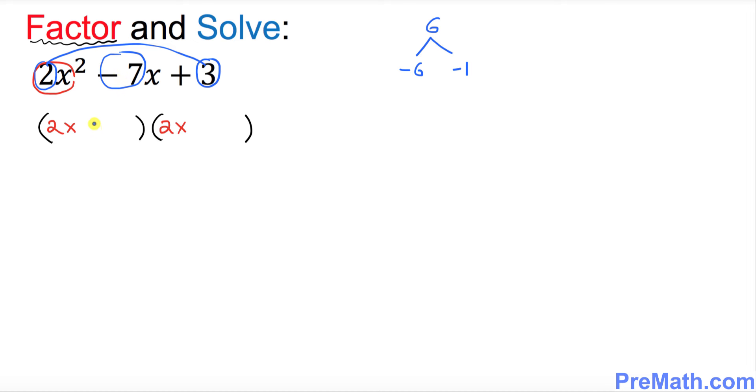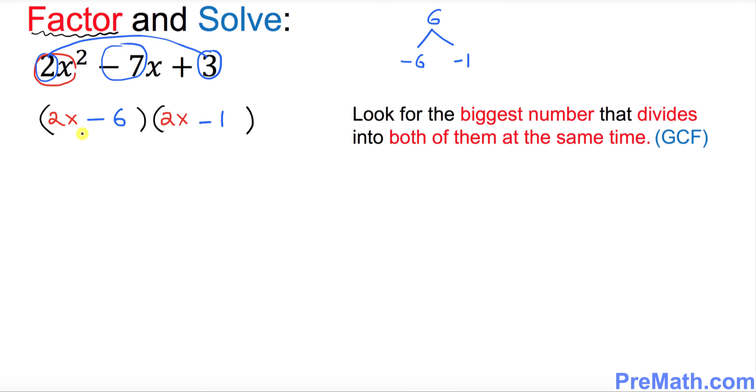Now in the next step, I want you to look at the very first parentheses. What are your numbers? Your numbers are 2 and 6. I want you to look for the biggest number that divides into both of them at the same time. So 2 is going to be the biggest number that divides into 2 of them. You divide by 2 both of them.